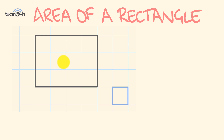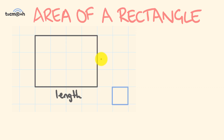G'day, welcome to the Tech Math channel. This is a quick video that looks at how to work out the area of a rectangle — that is, the space taken up by a rectangle. The first important thing to recognize is that you're dealing with a two-dimensional shape. A two-dimensional shape is a flat shape that has two dimensions. A rectangle has the dimension of length and the dimension of width.